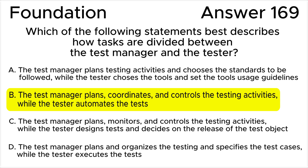All the rest of the answers are wrong. Answer A is wrong because selection of tools is a test manager task, not a tester task. Answer C is wrong because the tester does not decide on the release of the test object — this is the responsibility of the test manager.